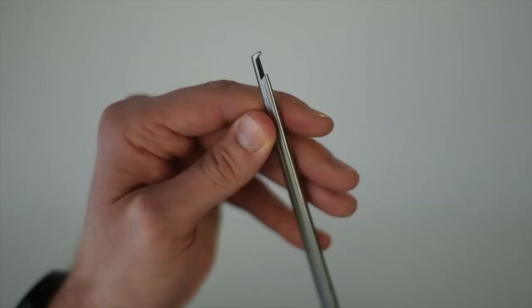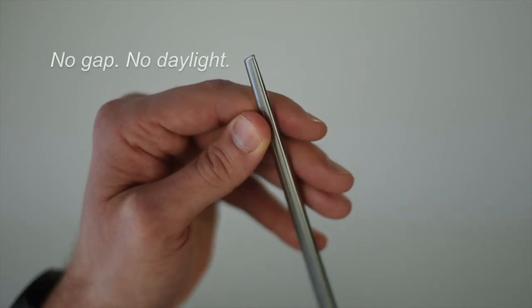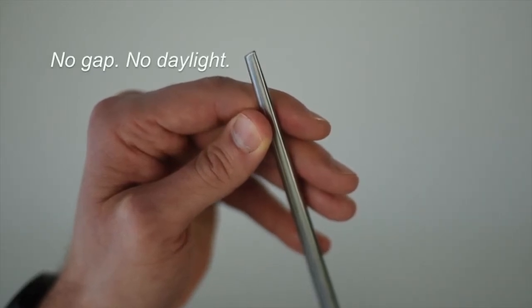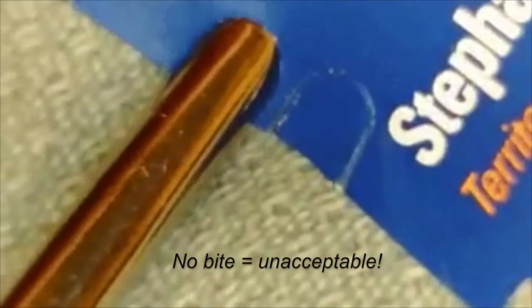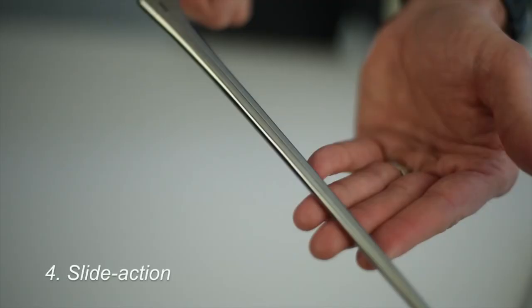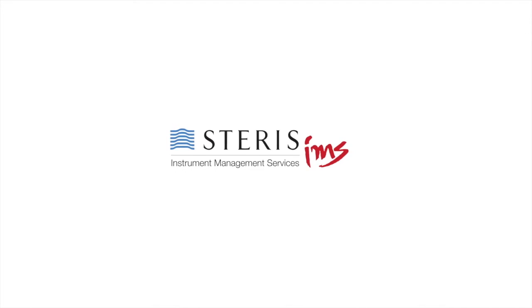When you pull the trigger, the footplate as well as the slide need to meet at the top. If there's any gap there or any damage to the edge on either side, it's dull and needs to be set aside for repair.